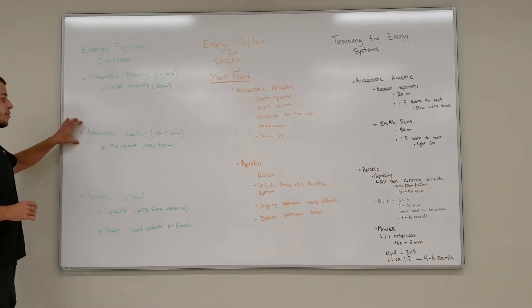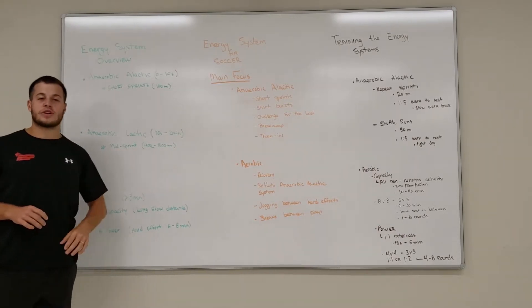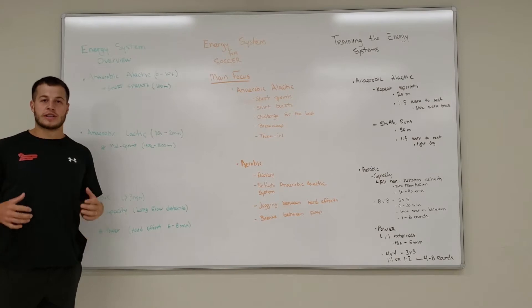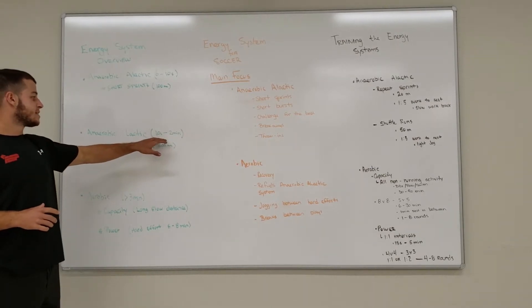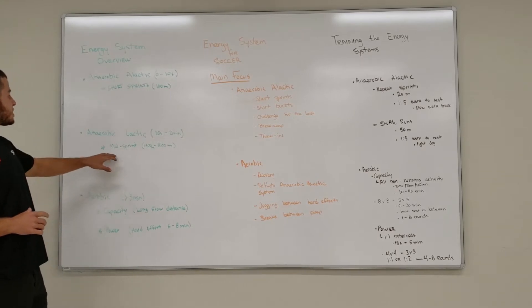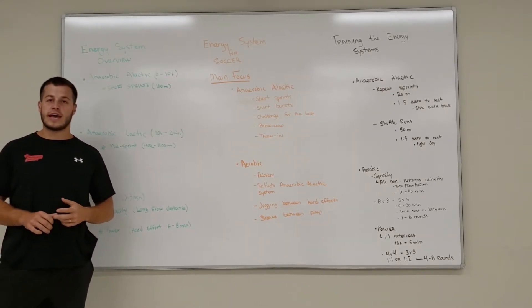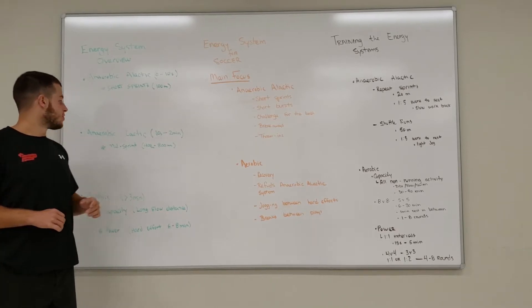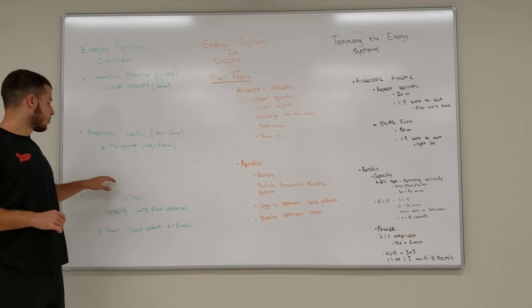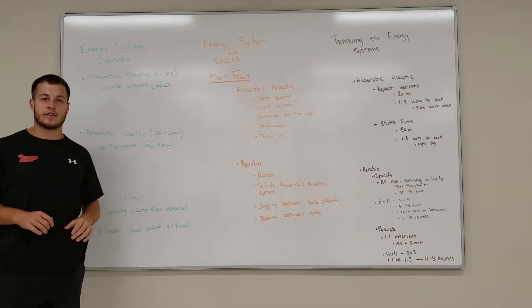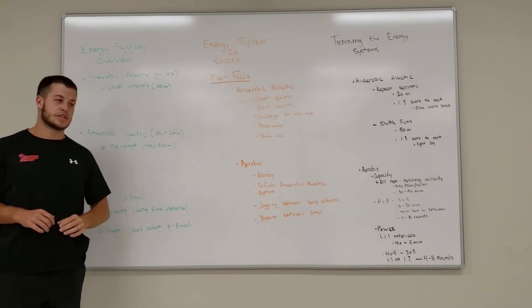Then we have our anaerobic lactic system. The easiest way to think about this is activities where you feel that burn in your legs or arms. That's 10 seconds to 2 minutes — something like a 400 meter or 800 meter sprint. You're going to feel that burn. You're not quite getting into an aerobic state, but it's going to be a lot tougher, and you're going to last a lot longer than with the anaerobic alactic system.